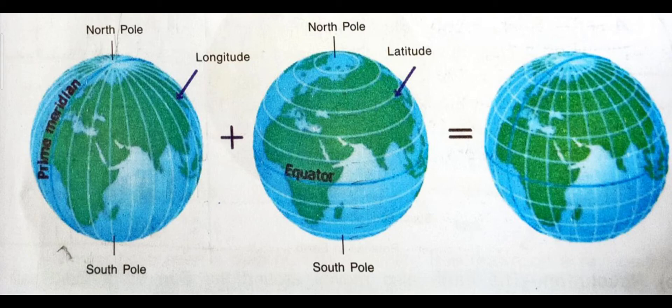In the first picture, the vertical imaginary lines are the meridians, also called longitudes or lines of longitude. They run from the North Pole to the South Pole.